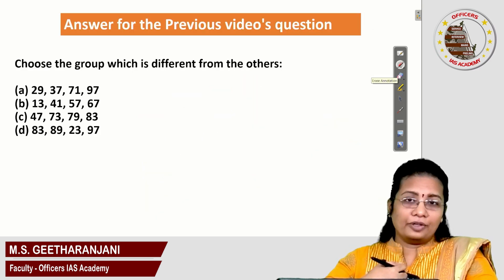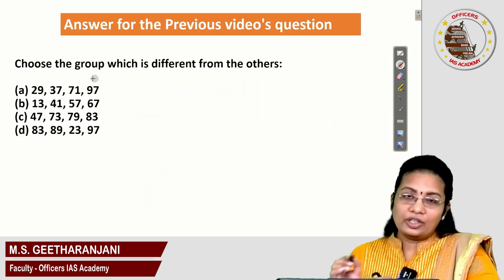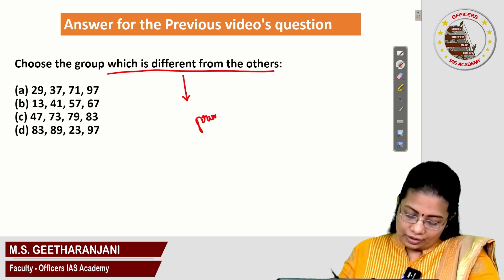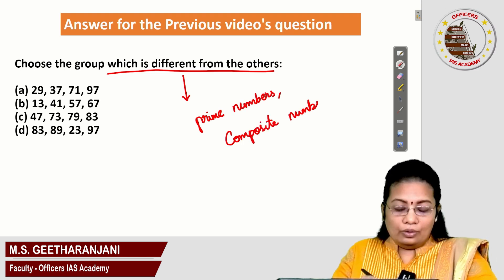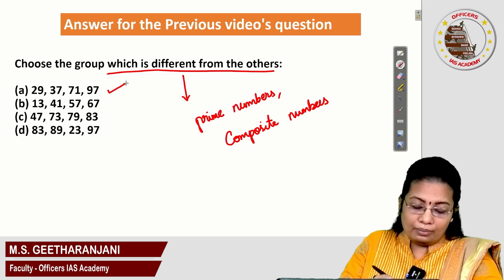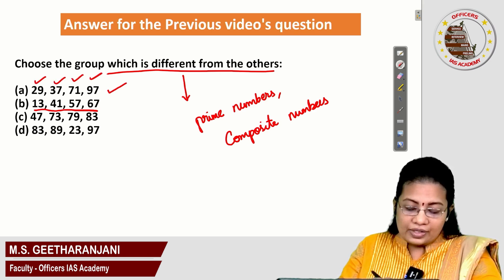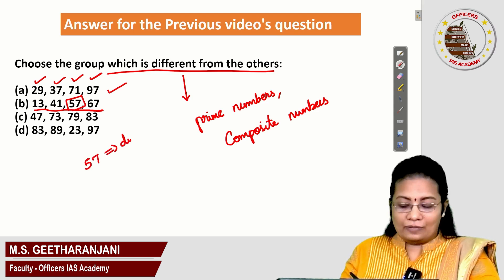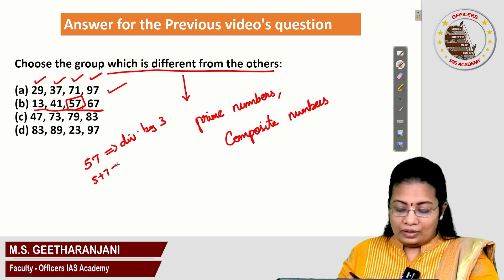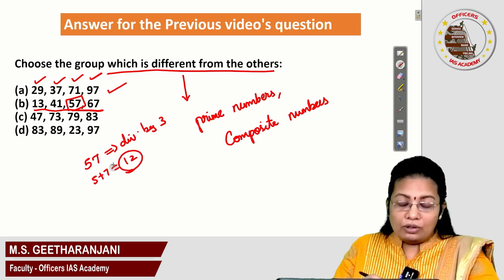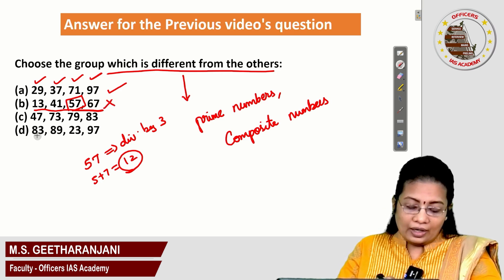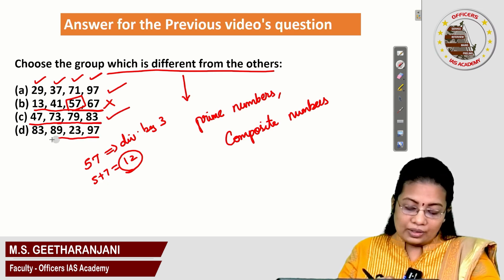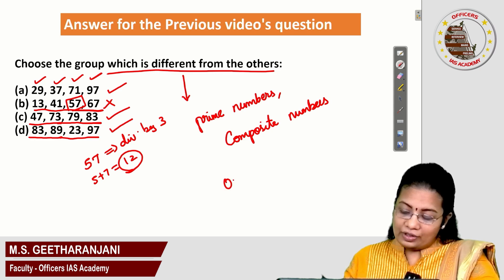Now the answer for the previous video's question: 'Choose the group which is different from the others,' from the concept of prime and composite numbers. In option A, everywhere we got prime numbers. In option B, 57 is not a prime number — 57 is divisible by 3, because 5+7=12, which is divisible by 3. So 57 does not belong to the prime number category. Checking options C and D, everywhere we can see prime numbers. So option B is the answer for the previous video question.